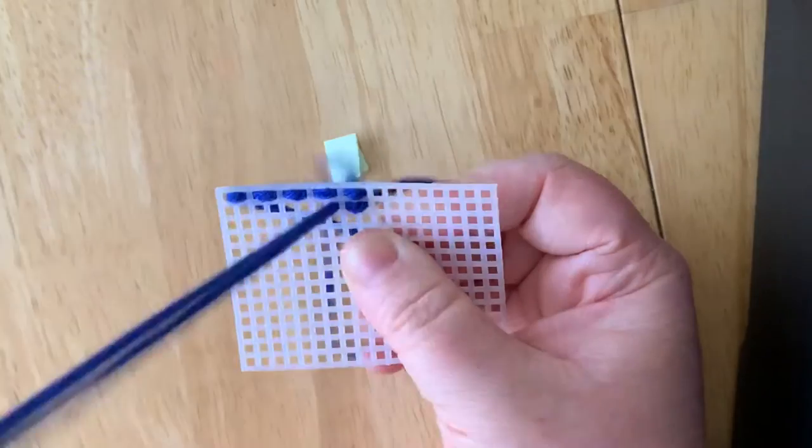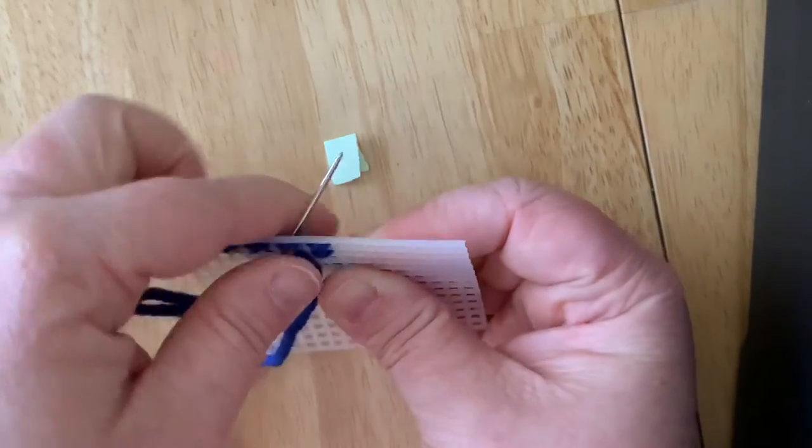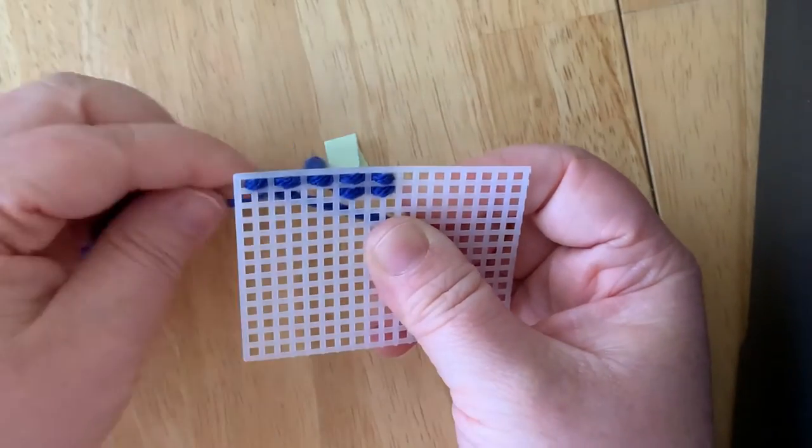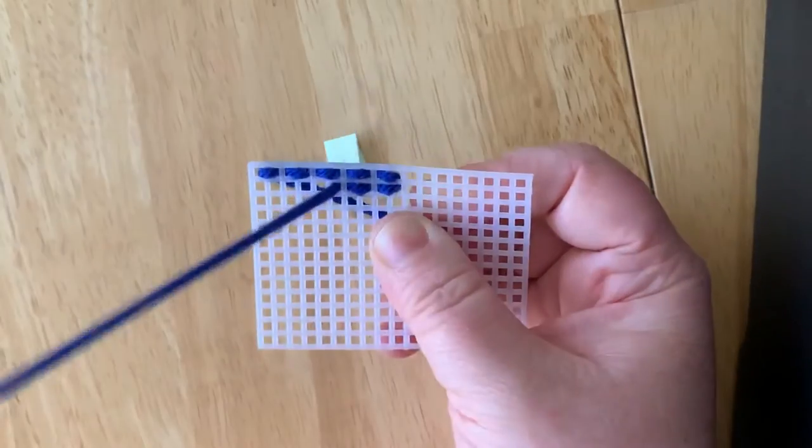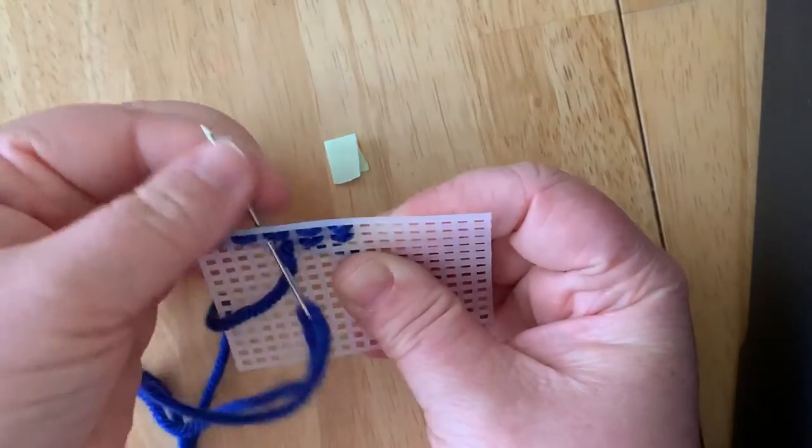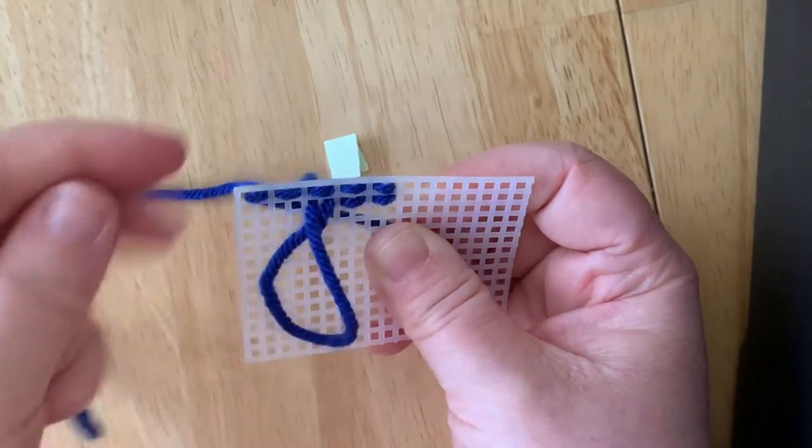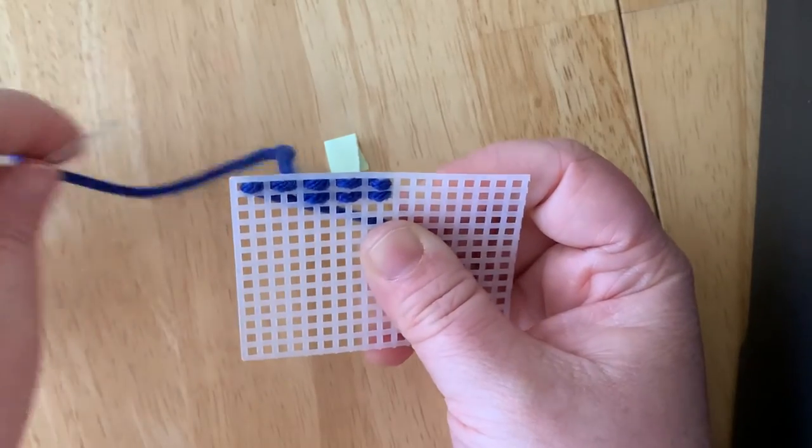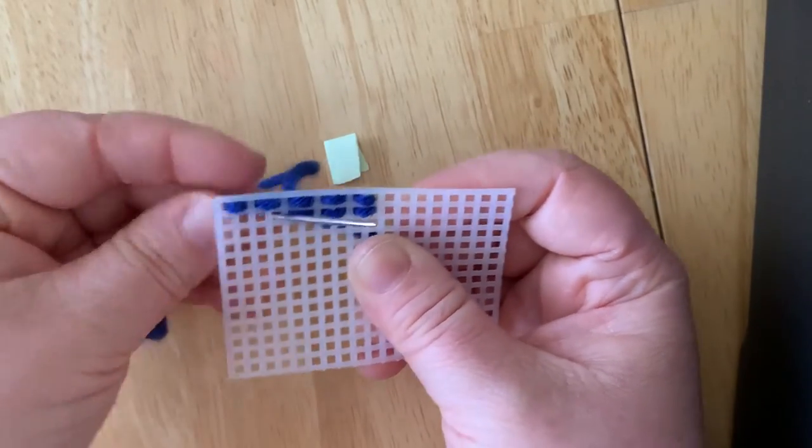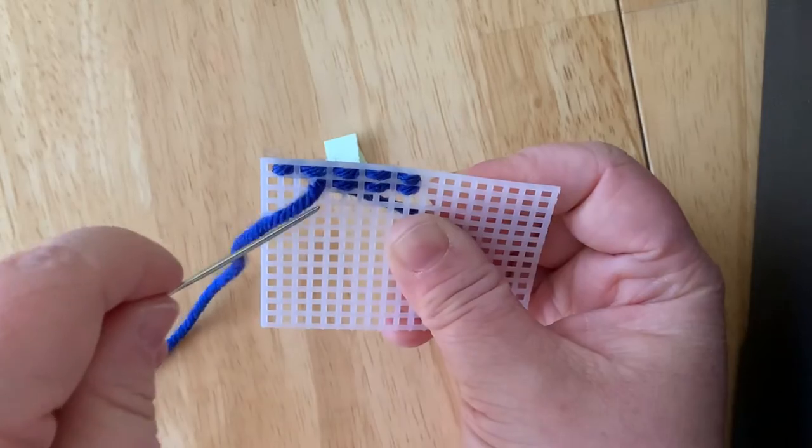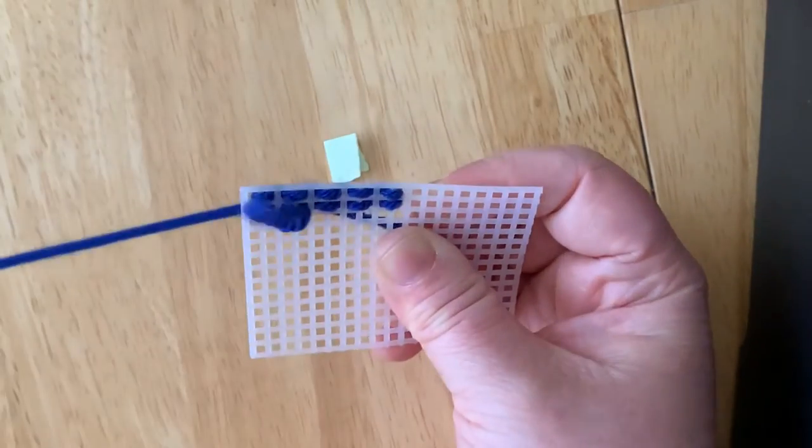This is how you do a running stitch. This is one of our first basic stitches that we're going to practice. If it gets caught in the corner, just gently pull it off. And there we go. This is called the running stitch.